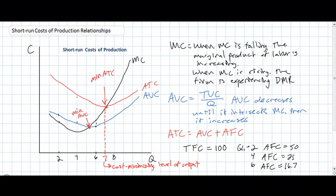So that wraps up this lesson. The whole point was to examine the relationships that exist between a firm's short-run costs of production — specifically the marginal cost, the average variable cost, and the average total cost. Thank you for watching.